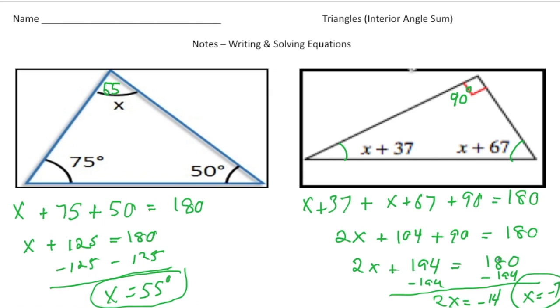Now if I wanted to know exactly what these angle measures are, I can plug in negative 7. So if I plug in negative 7 for x, well negative 7 plus 37 will give me a 30. If I plug in a negative 7 here, well negative 7 plus 67 gives you a 60. And guess what? If I add up the 90 plus a 60 plus a 30, we get that magical number of 180 degrees, and that's what we want.